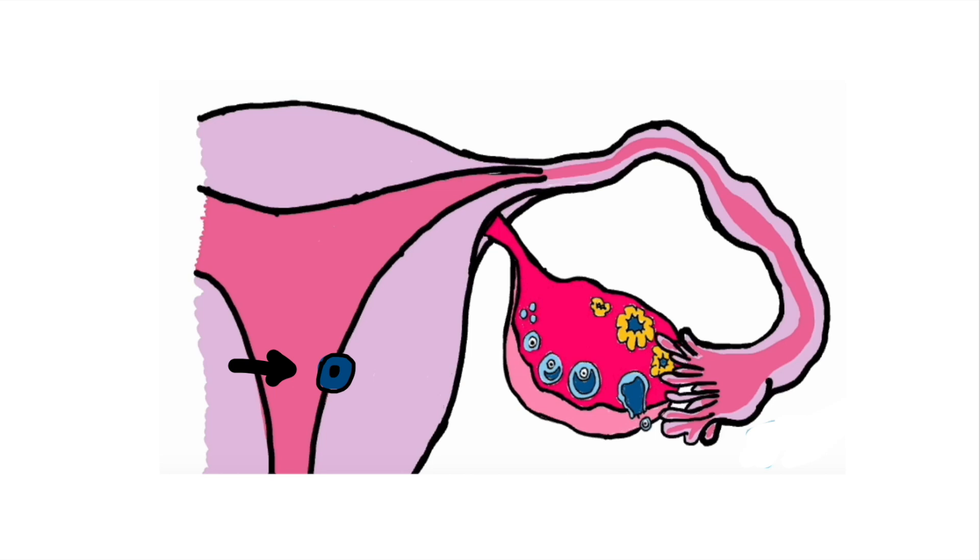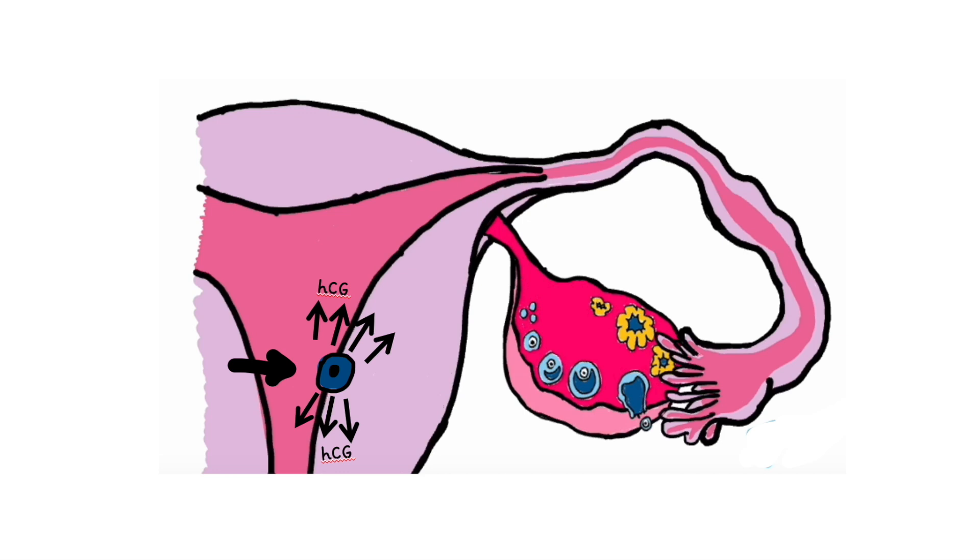If fertilization and implantation occurs, the developing embryo secretes human chorionic gonadotropin hormone, which supports the continued function of the corpus luteum.